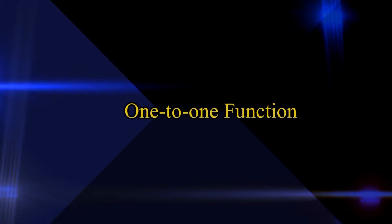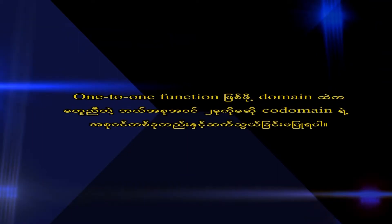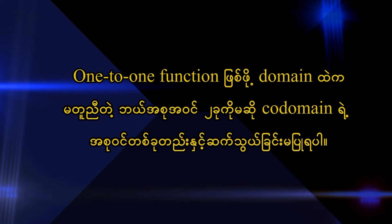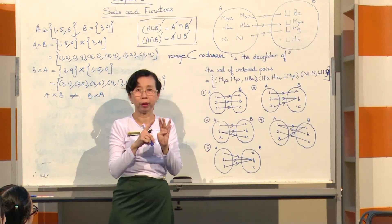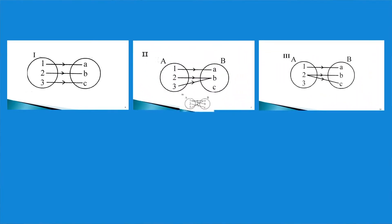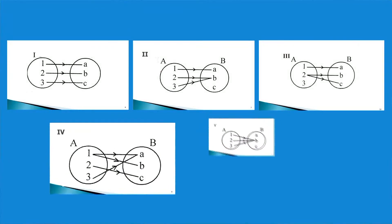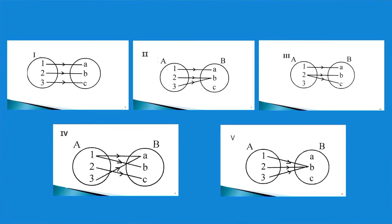The one-to-one function: for every element in the domain, it maps to a unique element. If two elements map to the same element, it is not a one-to-one function. A one-to-one function means each element in the domain maps to a distinct element in the range.